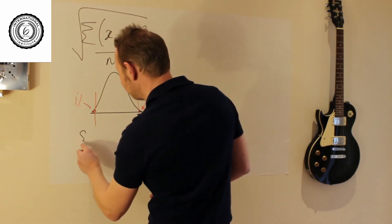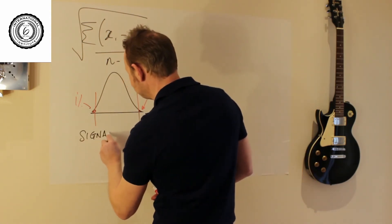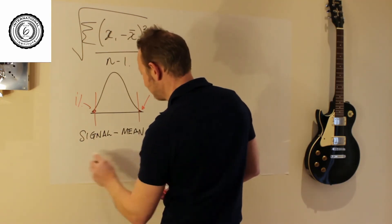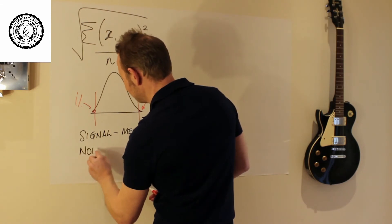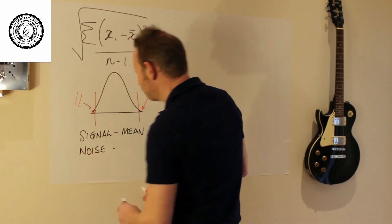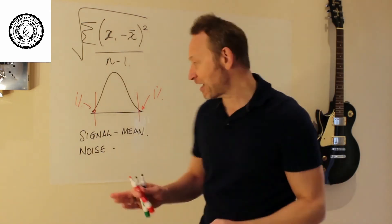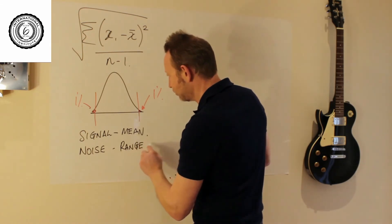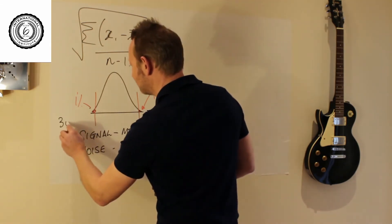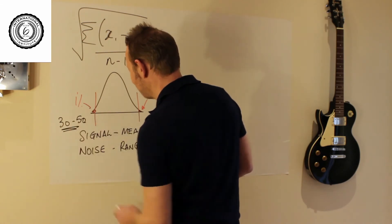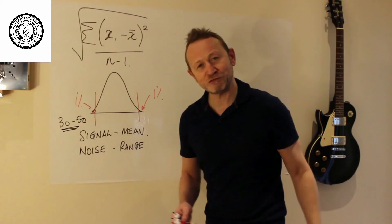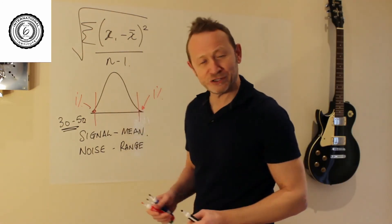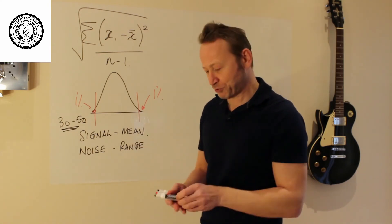You are going to calculate the signal, which typically is the mean, and you're going to calculate the noise, which is - if you just take the data at face value - you might just calculate the range of your sample. So you've taken 30 to 50 data points. You've calculated the mean and you've calculated the range, and then what you've done of course is you've held it up to scrutiny against what you're trying to achieve.